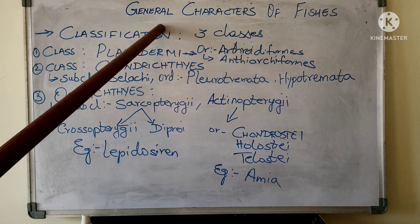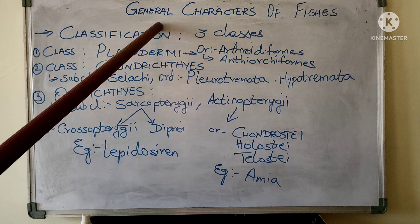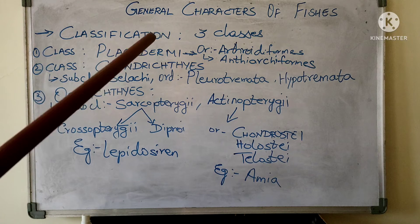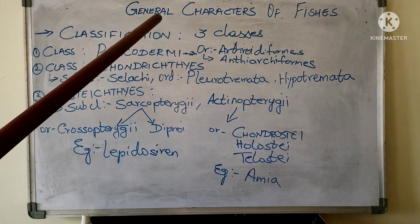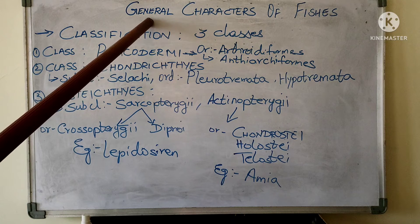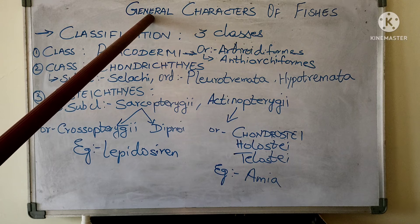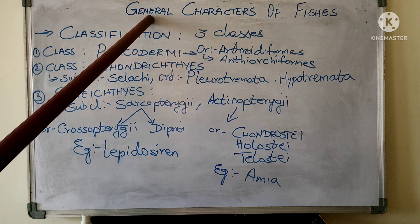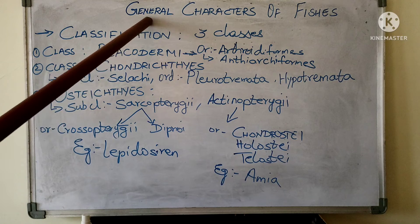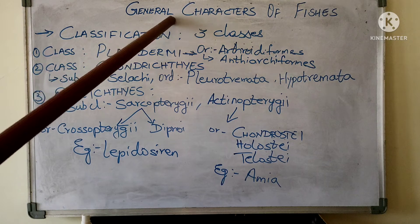Respiration is by gills, covered by the operculum. Heart is two-chambered — one auricle and one ventricle. Kidneys are mesonephric. The excretory product is urea, so that is the reason fishes are also called ureotelic animals. The nervous system is made up of the brain and ten pairs of cranial nerves. Paired nasal sacs are present, which do not open into the mouth.